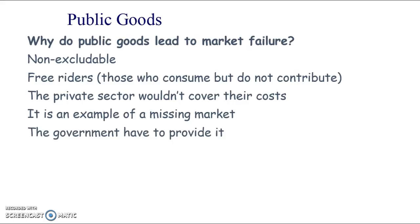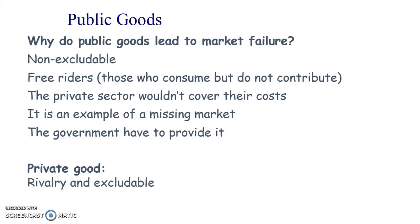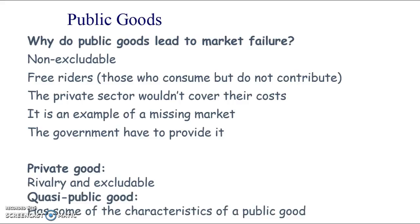This is what we call an example of a missing market — the market just wouldn't exist and therefore the government has to step in and provide it. That's why we call it a public good. But remember, not everything the government provides is a public good — it has to be non-excludable and non-rivalry. Only a few things really meet those criteria, so we use the term quasi-public good to show they have some characteristics of a public good but not all. A quasi-public good might be non-excludable but rivalry, or non-rivalry but excludable, or only partially so.